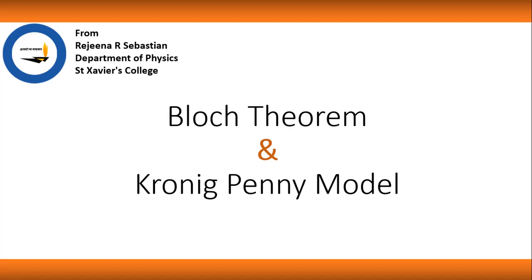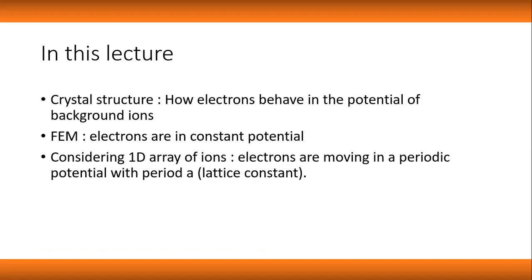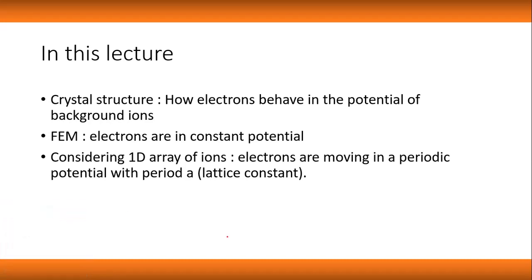Hello dear students. In today's lecture we will be learning about Bloch's theorem and the Kronig-Penney model. So far we have learned about the free electron model and how it successfully explains the electronic properties, thermal properties, magnetic properties, and optical properties of metals. In the free electron model, we considered electrons moving in a constant potential. Now we will look more deeply into the crystal structure of metals to understand how these electrons actually work, using a more mathematical, quantum mechanical approach.